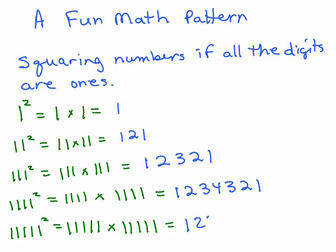And for five in a row, you should get 123454321.